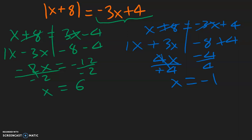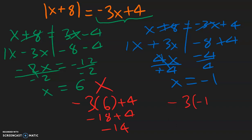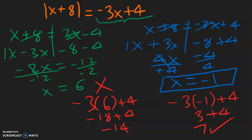Let's check each of them — plug them into the right side of the original equation. First I am going to put in 6 for x: negative 3 times 6 plus 4 — negative 3 times 6 is negative 18, plus 4 which is negative 14. That means x equal to 6 is not a real answer — that is the extraneous solution. Now let's check negative 1: negative 3 multiplied with negative 1 plus 4 — negative 3 times negative 1 is positive 3, plus 4 which is 7. And this is okay because it is positive. So the only real solution is x equal to negative 1.